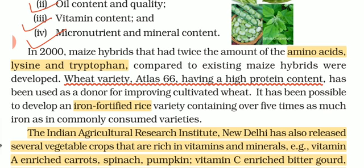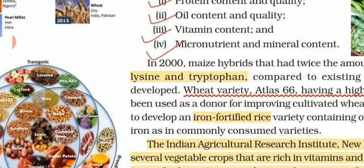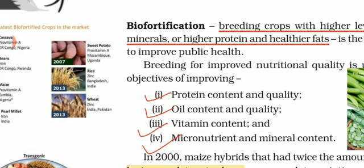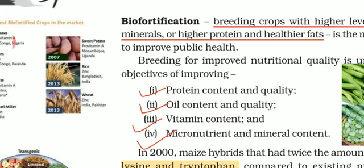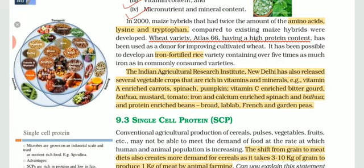Coming back to biofortified crops: number one, maize hybrids made rich in two amino acids — lysine and tryptophan. You have to learn the names of these amino acids. Number two is wheat variety Atlas 66, made rich with high protein content. Number three is iron-fortified rice — iron as well as zinc made rich in rice, five times increased compared to earlier consumed varieties.